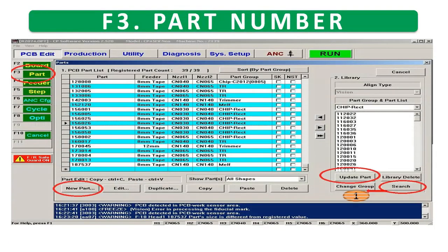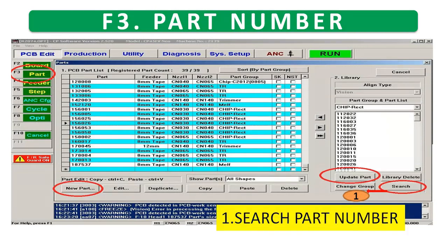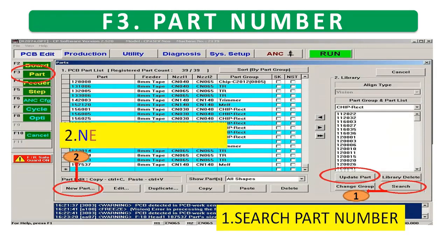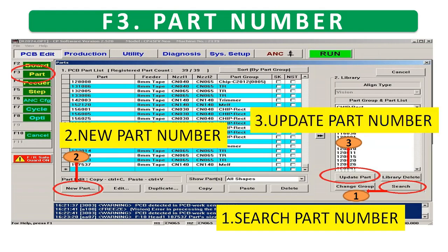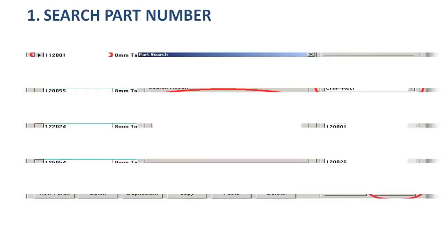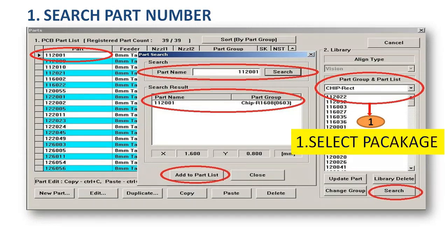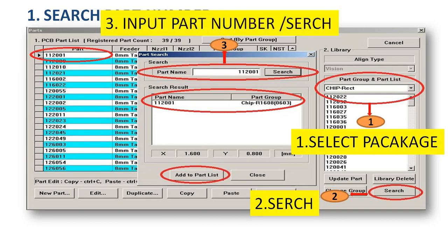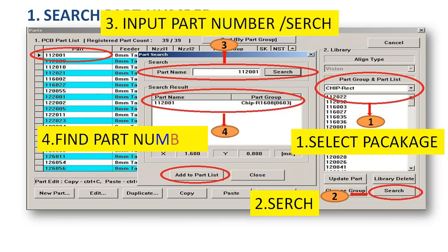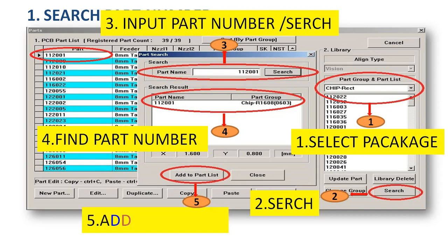F3 part number. First: search part number. Second: new part number. Third: update part number. Component library: first select pocket cage, second search, third input part number search, fourth find part number, fifth add in part list, sixth part number added.